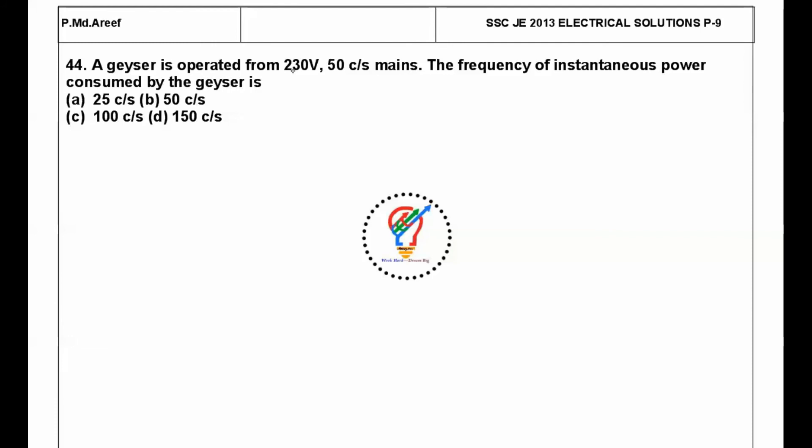The next question is: a geyser is operated from 230 volts, 50 cycles per second. 50 cycles per second means 50 Hz frequency. The frequency of instantaneous power consumed by the geyser is? P(t) always has a frequency of 2 times the supply frequency.